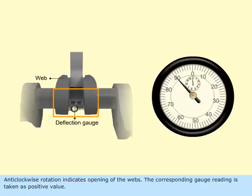Anti-clockwise rotation indicates opening of the webs. The corresponding gauge reading is taken as positive value.